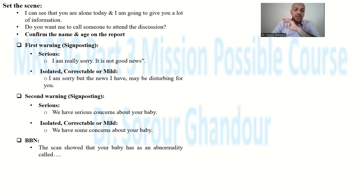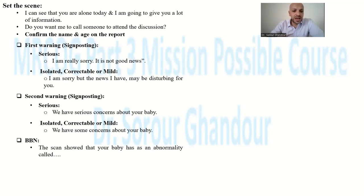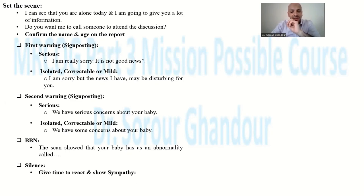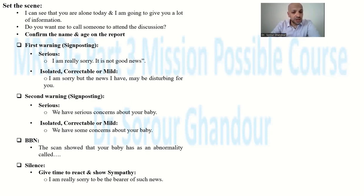After the signposting, give the bad news directly. Don't twist or change your approach — give her the facts directly. For example: "The scan showed that your baby has an abnormality called talipes" or "The scan showed an echogenic bowel." Then start explaining. But before explaining, remain silent for a short time — around 5 to 10 seconds. Tell the patient the abnormality, remain silent briefly, then say: "I'm really sorry to be the bearer of such news."